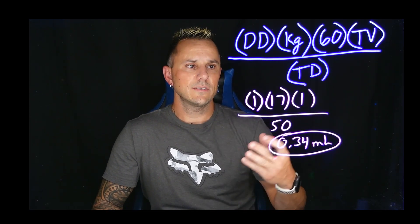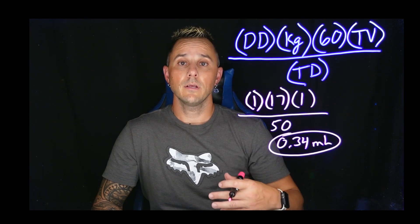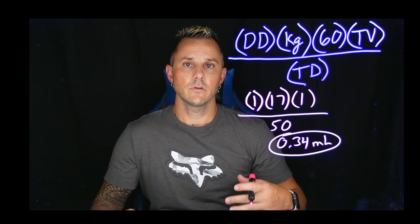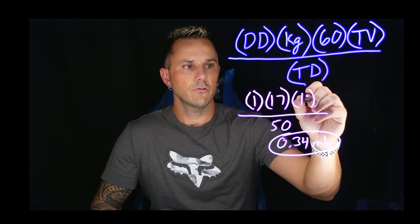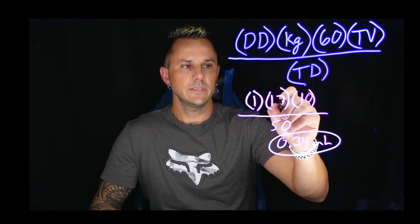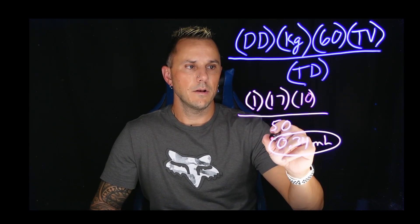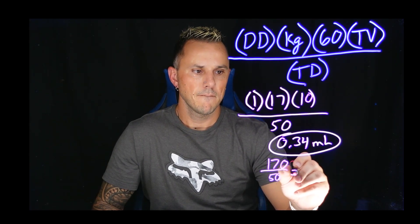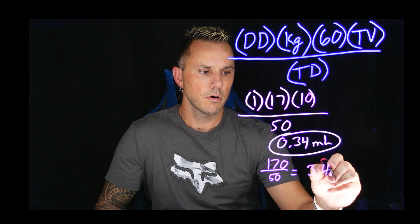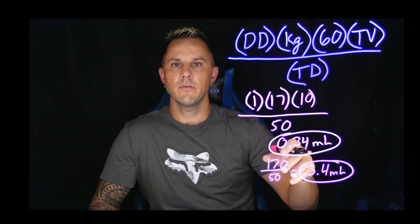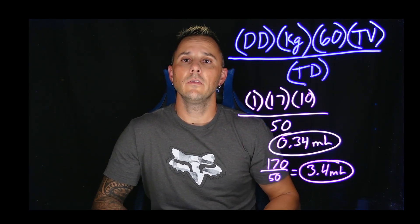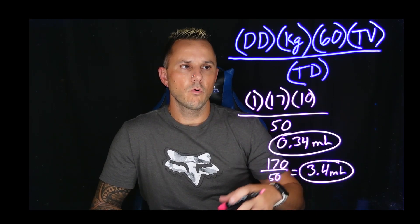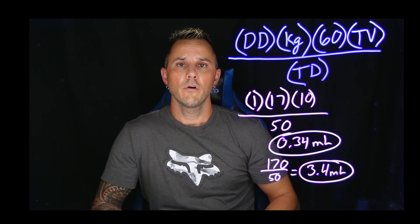Another thing you can do with this formula is take this 1 mL of Benadryl and simply put it in a 10 mL syringe with 9 mLs of normal saline, giving us a total of 10 mLs of fluid. All we would do is change the total volume here to a 10. That gives us 1 times 17 times 10 divided by 50, which is 170 divided by 50, equaling 3.4 mLs. With a 5 or 10 mL syringe it's easier to give 3.4 mLs than 0.34 mLs. That is the hybrid formula as used for a bolus medication.